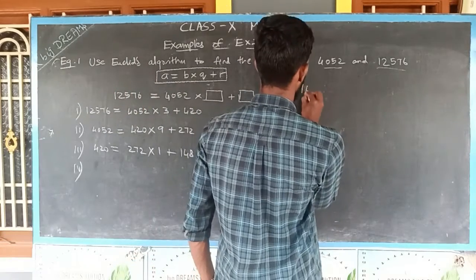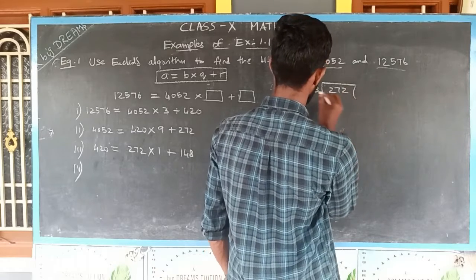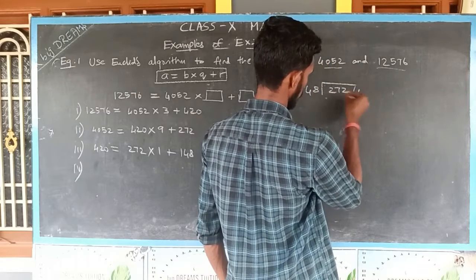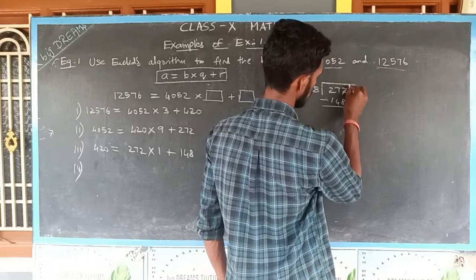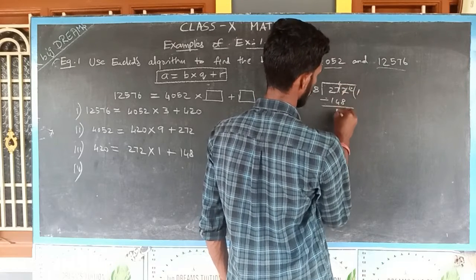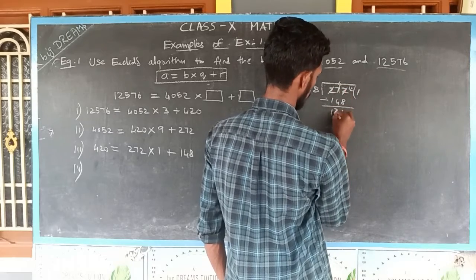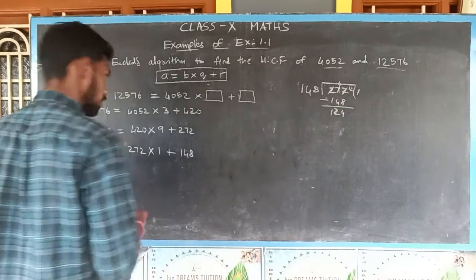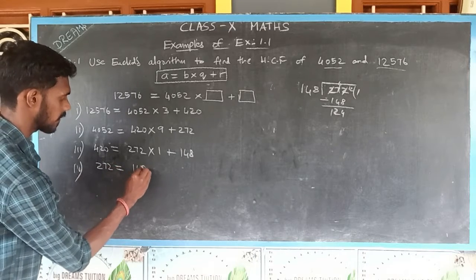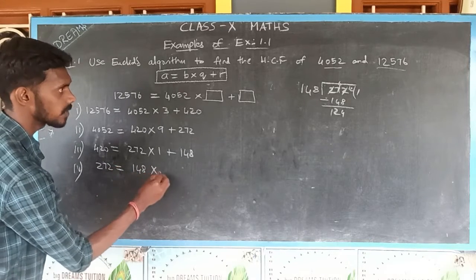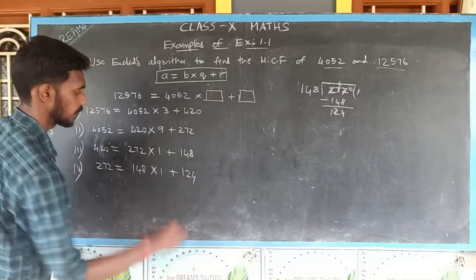The new divisor is 148 and the dividend is 272. Dividing 272 by 148, the quotient is 1. Subtracting: 272 − 148 = 124. I am getting 124 as the remainder. So 272 = 148 × 1 + 124.